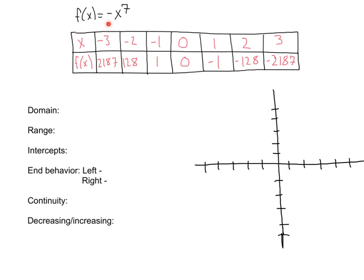In this one we have f of x equals negative x to the seventh. We have a negative a-term in the front and an odd exponent, so we know it's going to be going opposite ways — going downward. But let's make our table anyway. We've got negative three giving 2,187 — way up here; negative two giving 128 — way up there; negative one giving 1; zero giving zero; positive one giving negative one; two giving negative 128, way down here; and three giving negative 2,187, way down here. The graph looks something like this, which is what we predicted based on our odd power and negative a-term.